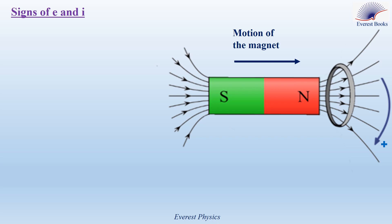Now we want to compare the signs of E and I. Consider the figure: a bar magnet is moved towards a vertical conducting loop. We want to determine the direction of the induced current by applying Lenz's law, and then determine the sign of E by applying Faraday's law, and then compare them. Let's start by determining the direction of the induced current.